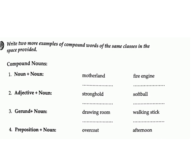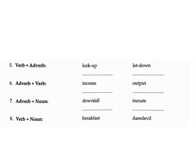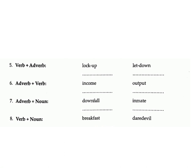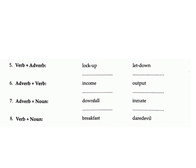3. Gerund plus noun: drawing room, walking stick – answers: spelling book, looking glass. 4. Preposition plus noun: overcoat, afternoon – answers: afterthought, downfall. 5. Verb plus adverb: lock up, let down – answers: die hard, go-between. 6. Adverb plus verb: income, output – answers: outset, outcome.